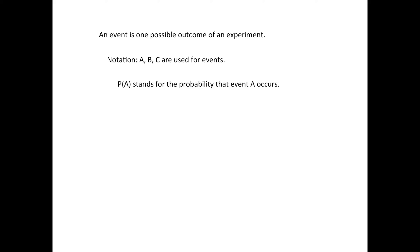In probability, when we use the word event, it's one possible outcome of an experiment. You buy one lottery ticket — the event could be I'm going to win, or the event could be I'm going to lose. We're going to use capital letters at the beginning of the alphabet for events. So when it is written P of A, that stands for probability of A.